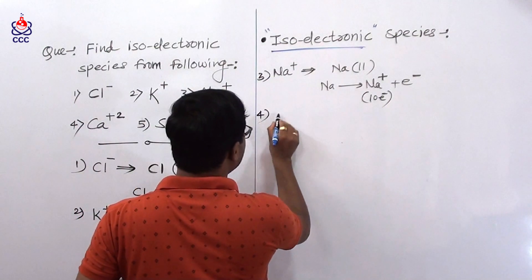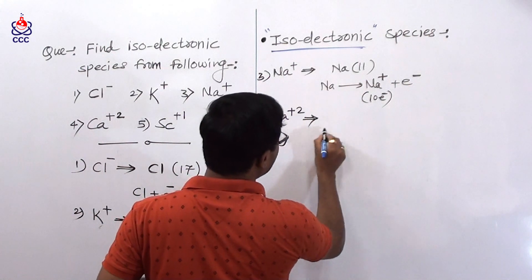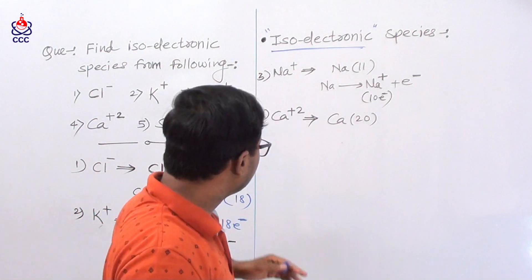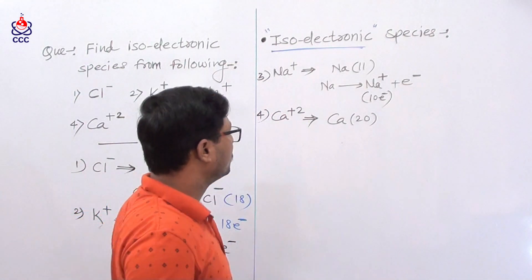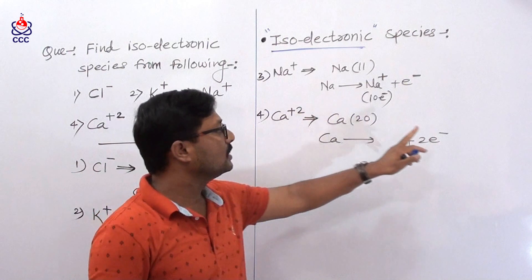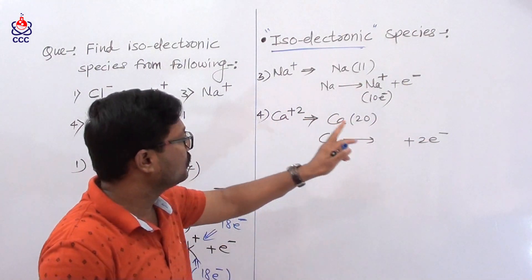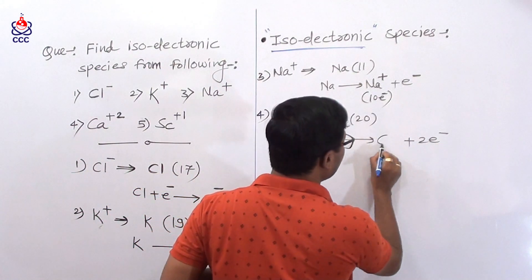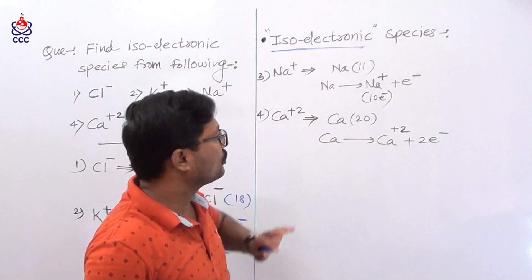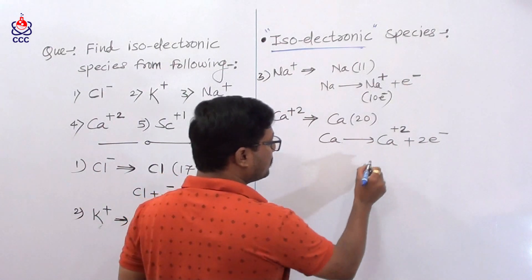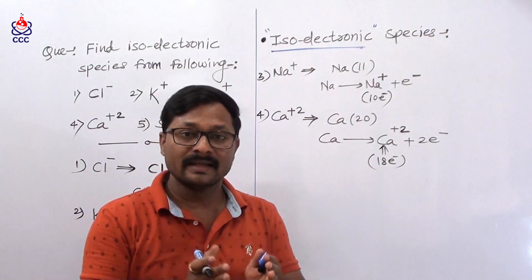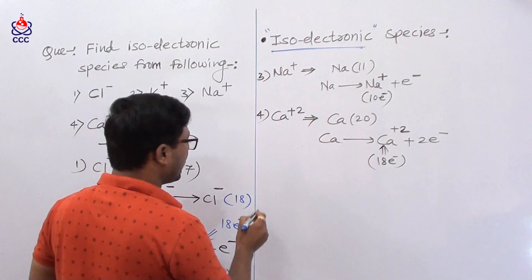The next example is Ca2+. Calcium has atomic number 20. When calcium loses 2 electrons, it forms the Ca2+ ion. Calcium originally has 20 electrons — when 2 electrons are lost, it has 18 electrons. So Ca2+ ion has 18 electrons.